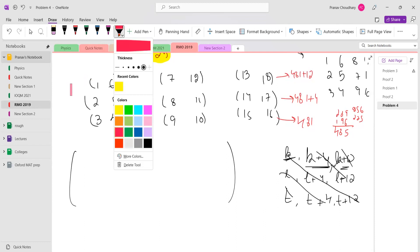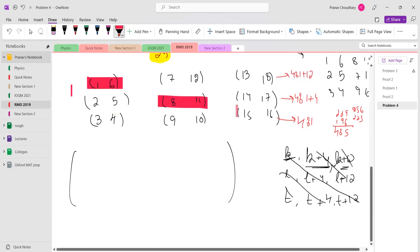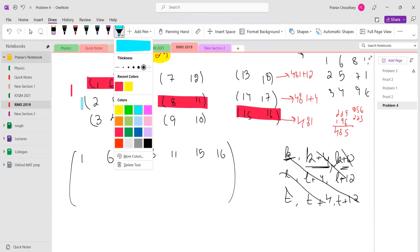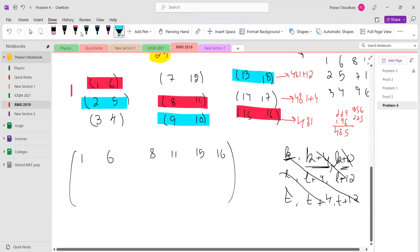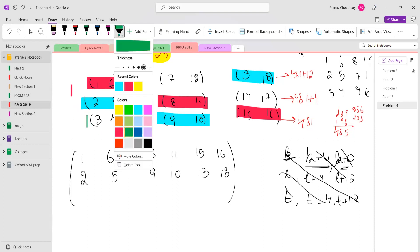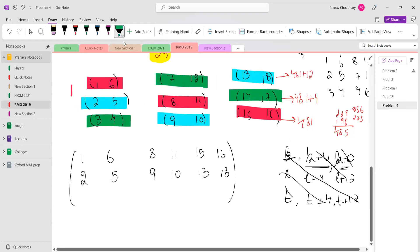Now what I can do is I can just take this, this, this, and this. So this will be 1, 6, 8, 11, 15, 16. Then I can take this, this, and this: 2, 5, 9, 10, 13, 18. And the remaining three elements: 3, 4, 7, 12, 14, 17. This way the sum of the numbers is obviously equal.